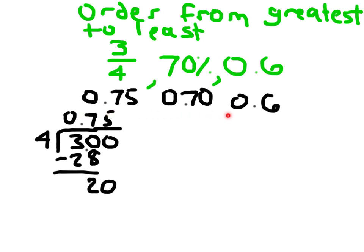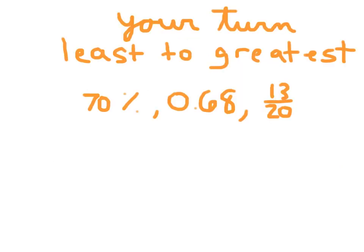Now I can go ahead and compare those. And after I compare them, I rewrite the list back. It says from greatest to least. So our greatest is 3 fourths. Next one is 70%. And finally we have 0.6. And it so happened then that our list was already in order. From greatest to least.